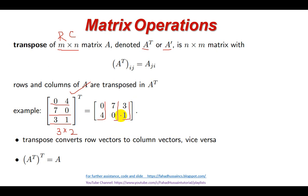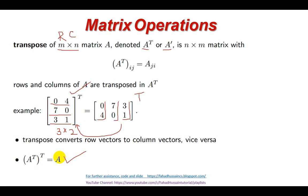If I take the transposed matrix back to transpose again, I will get the original matrix. This property shows that if you take the double transpose of a matrix, you get back the original matrix. So first of all, that is the definition and working of transpose.